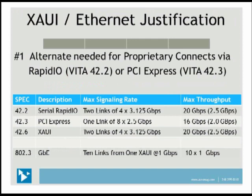Why was XAUI invented? For some time, people have been using RapidIO (Vita 42.2) or PCI Express (Vita 42.3), and typically they put proprietary software packages on top of those electrical interfaces. If we look at the 42.2 serial RapidIO spec, you've got two links, each comprised of four lanes at 3.125 gigabits per second, which gives you 20 gigabits per second overall, or 2.5 gigabytes per second.